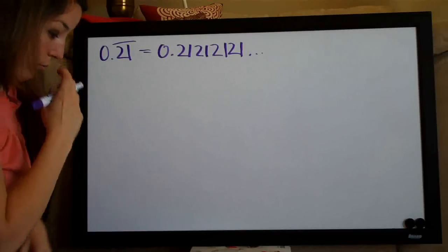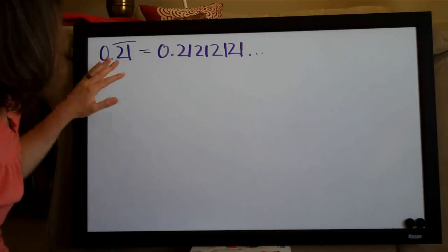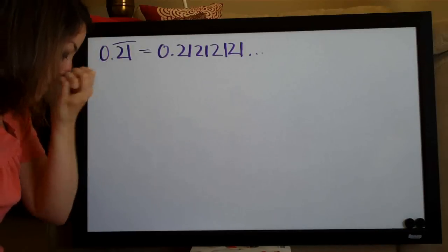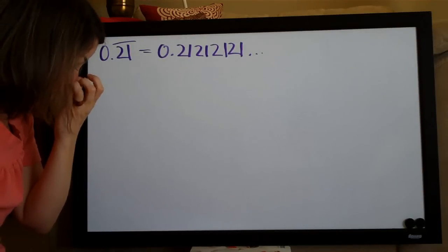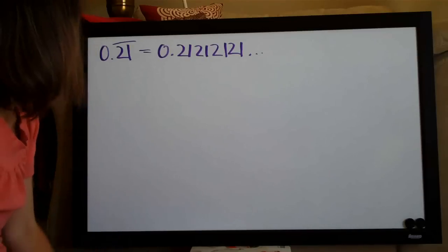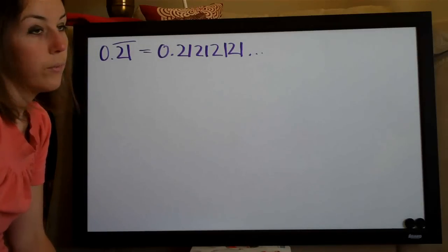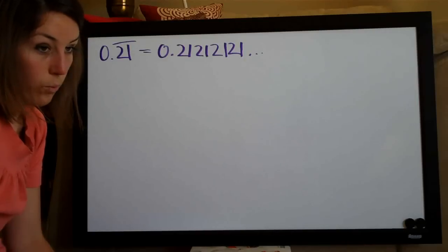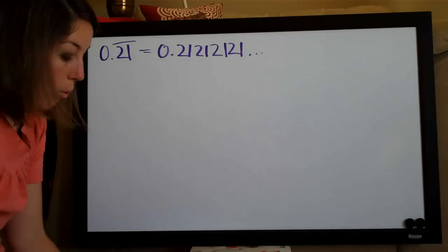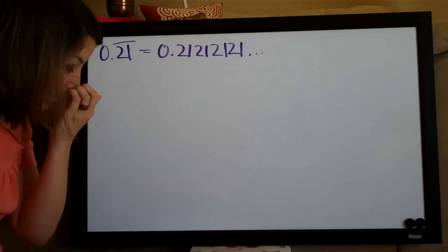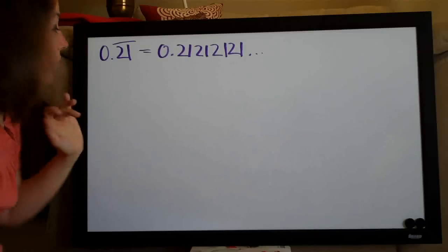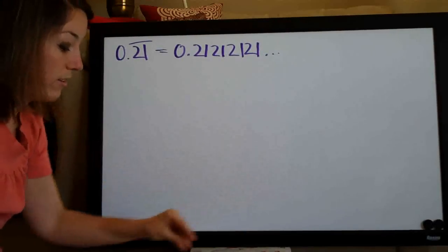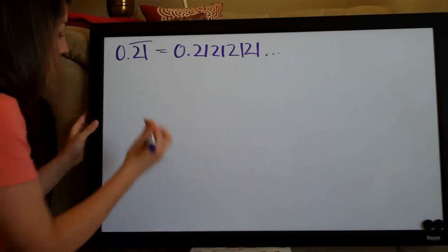That's what this represents. They've given us this infinite decimal and asked us to write it as a simple fraction, which means we need to determine what value it converges to, or the sum of the series. The formula we use to determine this — and for almost all infinite series problems — is the following.